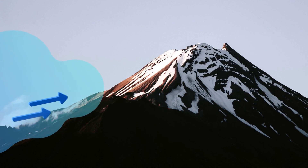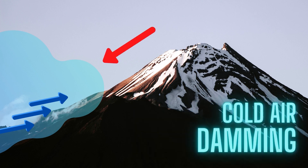For example, when a cold front moves through a mountainous area, cooler air settles closer to the ground because gravity will not allow it to climb up and over the mountain. This is more specifically known as cold air damming.